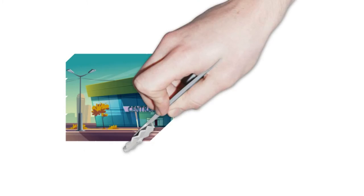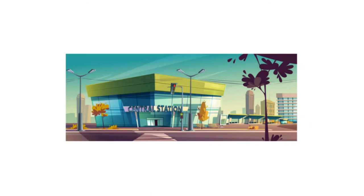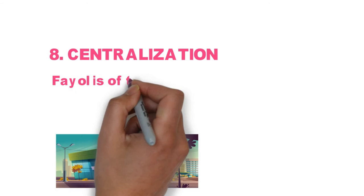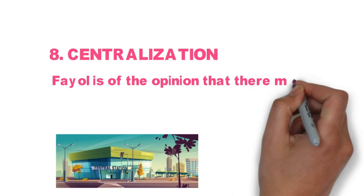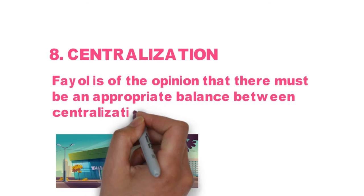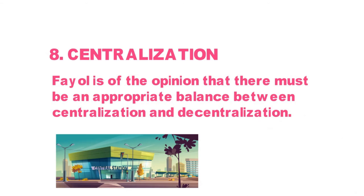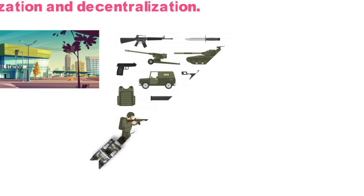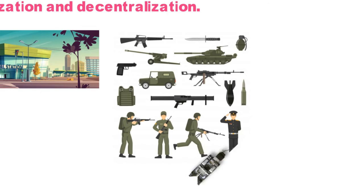Number eight: Centralization. When the power to make a decision lies with the top-level management, it is called centralization. When the power to make decisions is given to the person doing the work, it is called decentralization. Fayol is of the opinion that there must be an appropriate balance between centralization and decentralization. There must be a correspondence between centralization and decentralization depending on the size, nature, and location of the business. For example, the military has a centralized organizational structure, because those higher up order those below them and everybody must follow those orders.